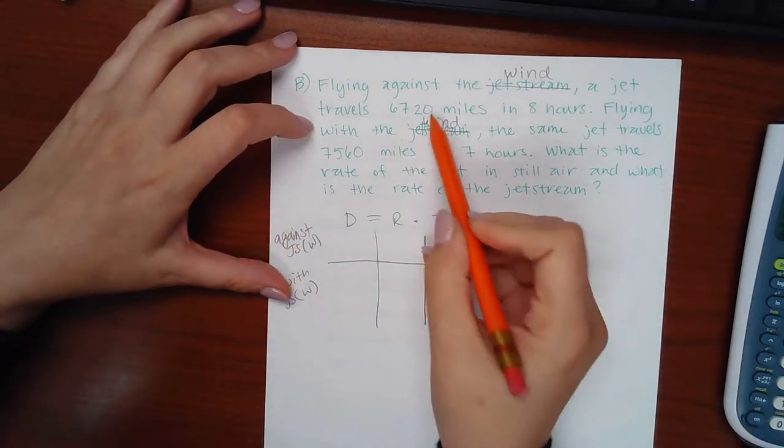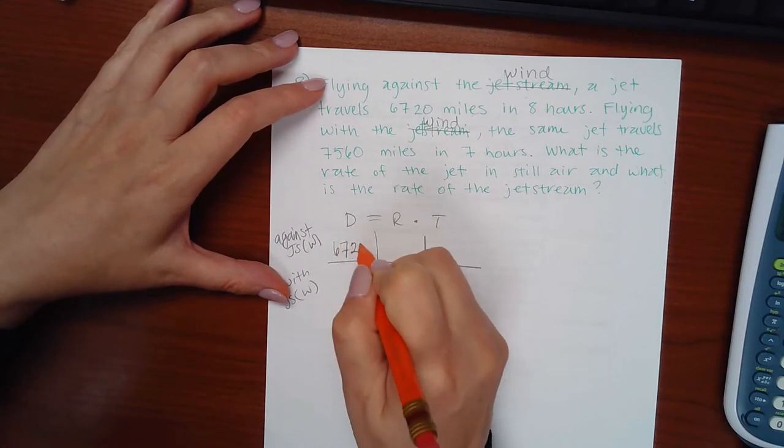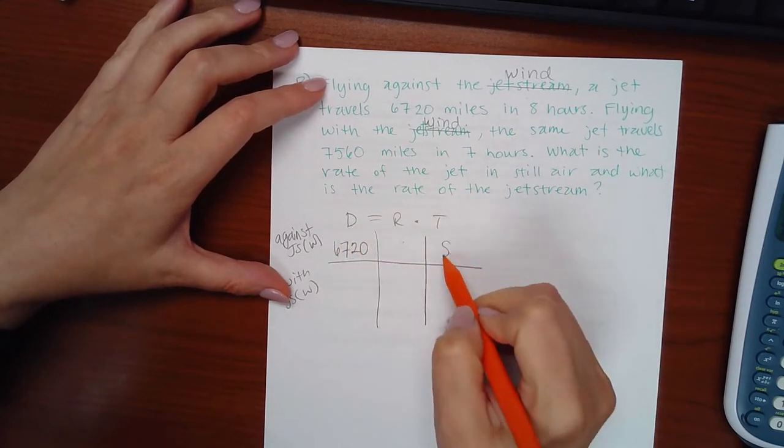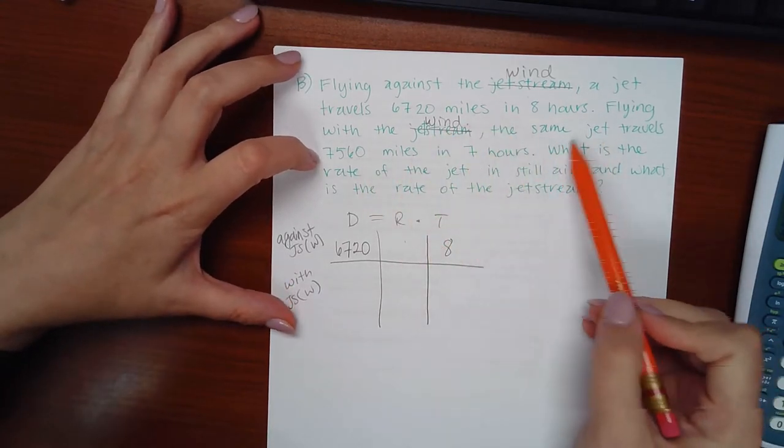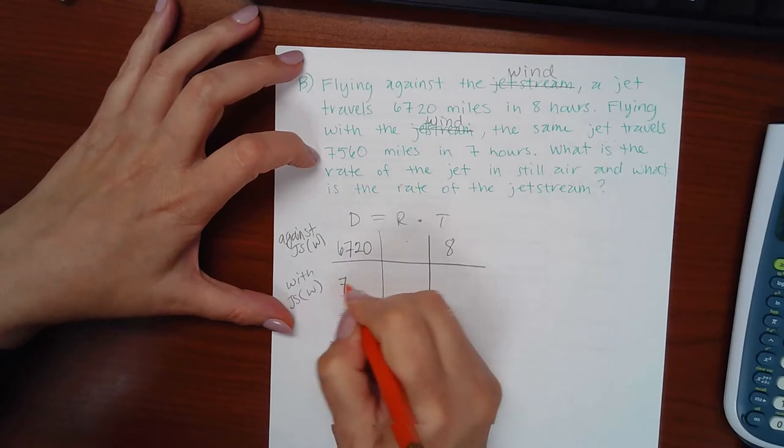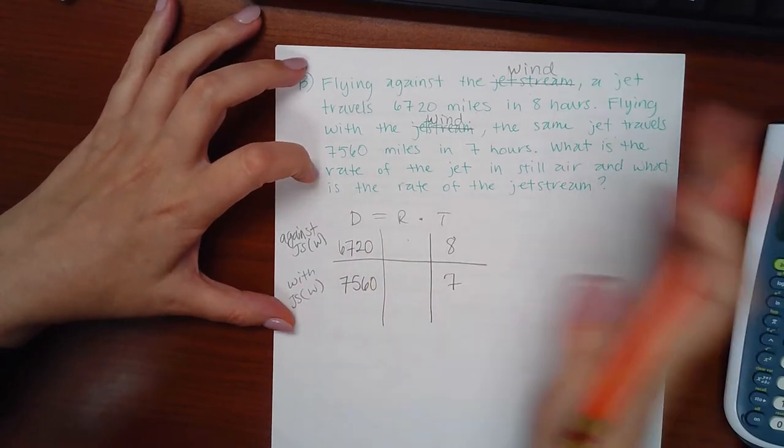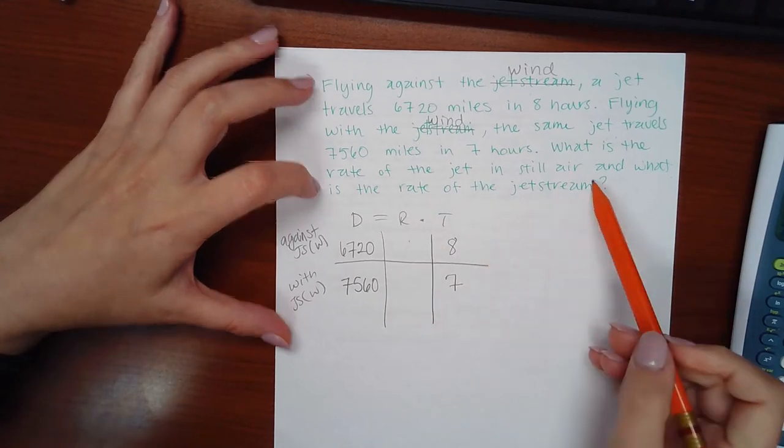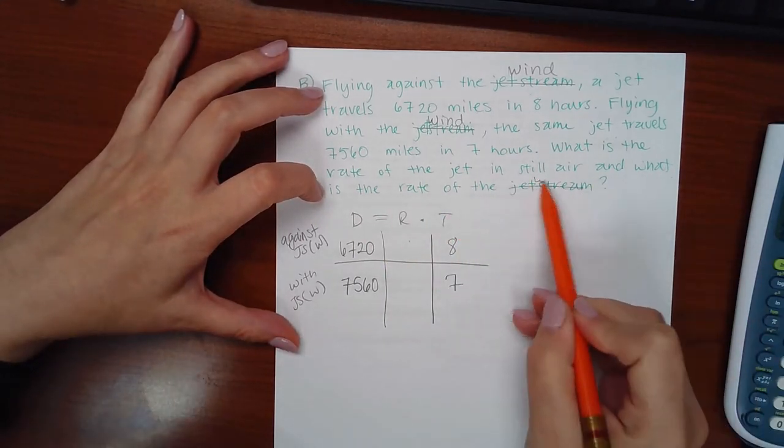And it says I traveled against 6720 miles in eight hours. And then with the wind or with the jet stream, the same jet travels this many miles in seven hours. What is the rate of the jet in still air and what is the rate of the jet stream or the wind, okay?